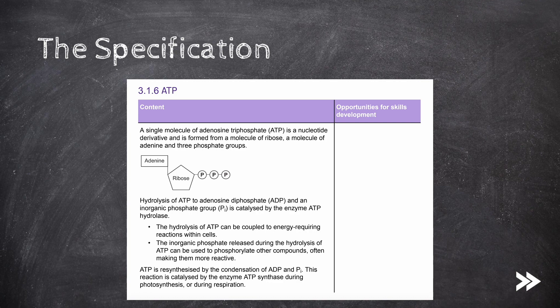We need to know that adenosine triphosphate, ATP, is a nucleotide derivative, and we need to know its structure. We need to know about ATP hydrolysis and how it may be coupled to energy-requiring reactions within cells, as well as how the inorganic phosphate ion released during ATP hydrolysis can be used to phosphorylate other compounds to make them more reactive. Finally, we need to know how ATP is resynthesized.